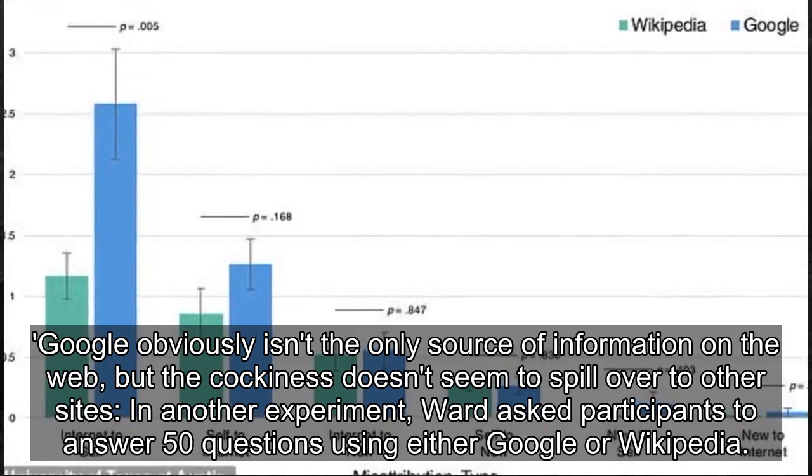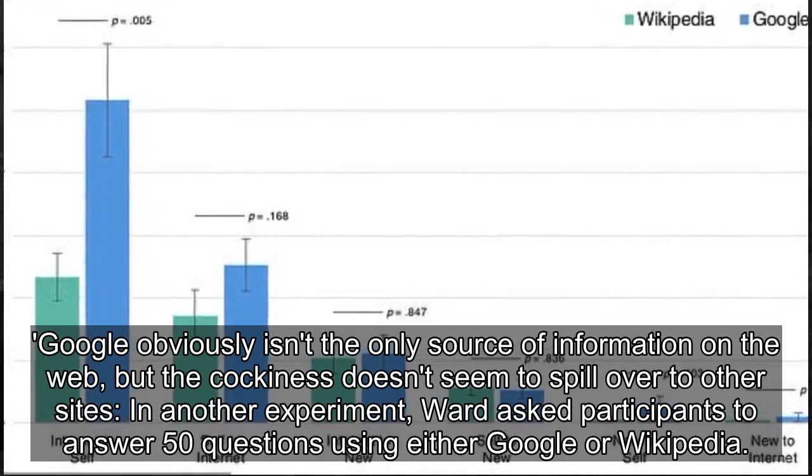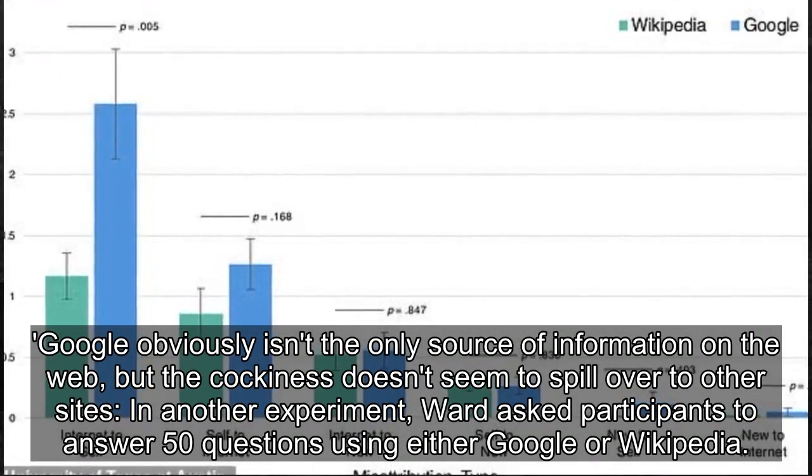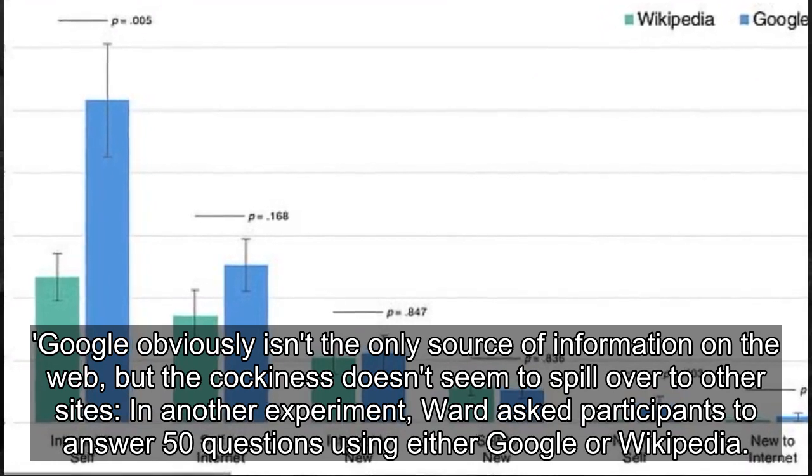Google obviously isn't the only source of information on the web, but the cockiness doesn't seem to spill over to other sites. In another experiment, Ward asked participants to answer 50 questions using either Google or Wikipedia.